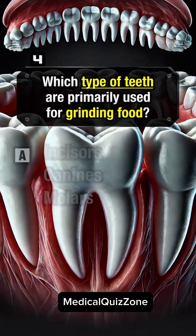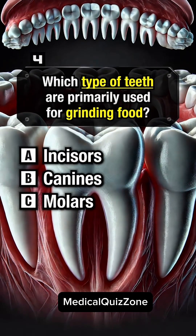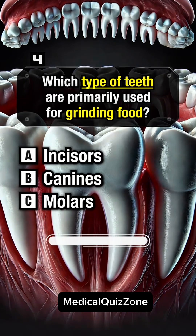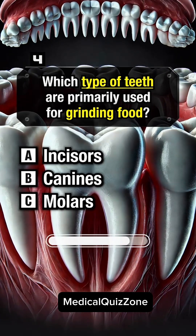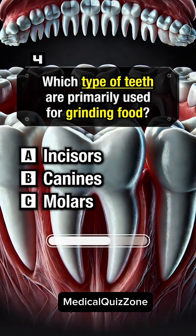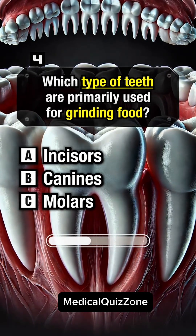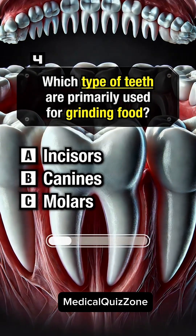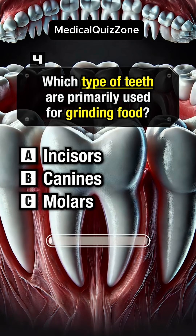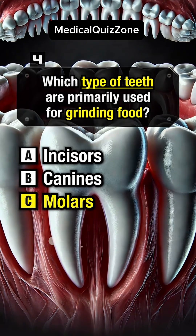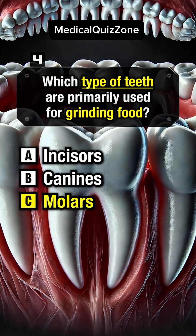Which type of teeth are primarily used for grinding food? Answer C: Molars.